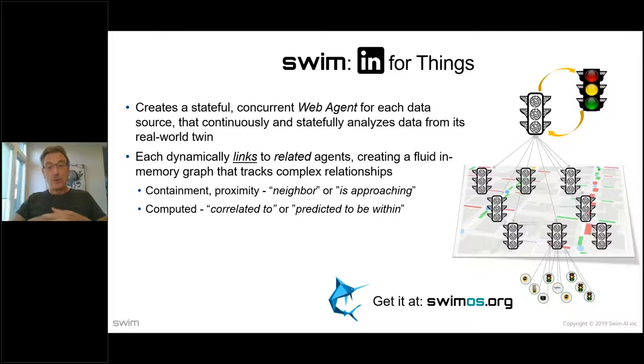In the case of traffic, which I'll go through in a little more detail, you see this intersection is linked to its neighbors. And linking can indicate very powerful things like containment or proximity, neighborliness or is approaching, things like that. It can indicate computed relationships, so correlation to or predicted to be within. So linking allows us to form an in-memory graph that links related web agents, each of which is an actor. And the links get dynamically built and torn down as the world moves around us. Now, what is the link? And what I'll be calling these web agents, they're called web agents because links are literally URIs. And that's important because for everything in the world, if I have a URI for it, I have access to its APIs and I can immediately send it data from the real world.